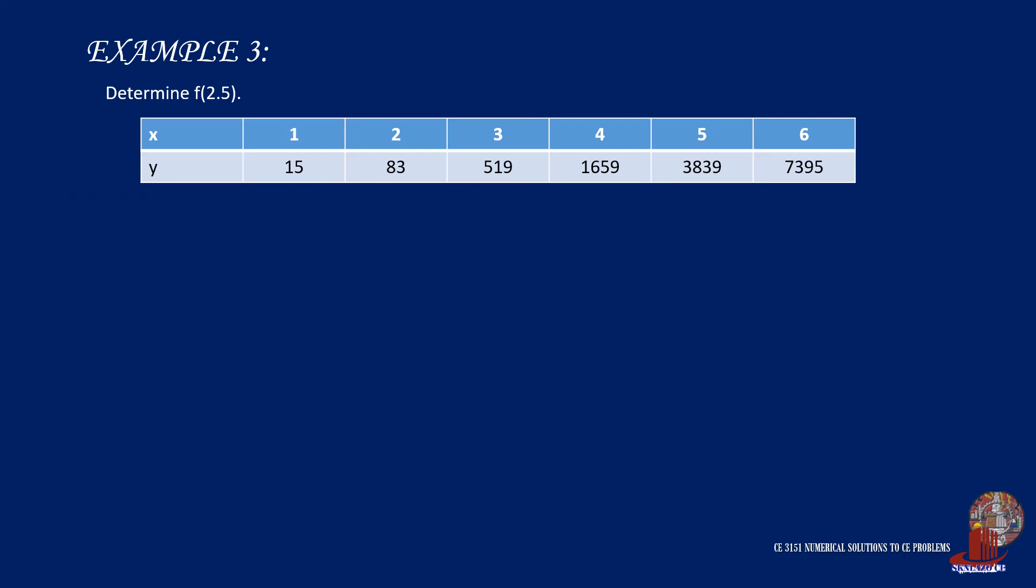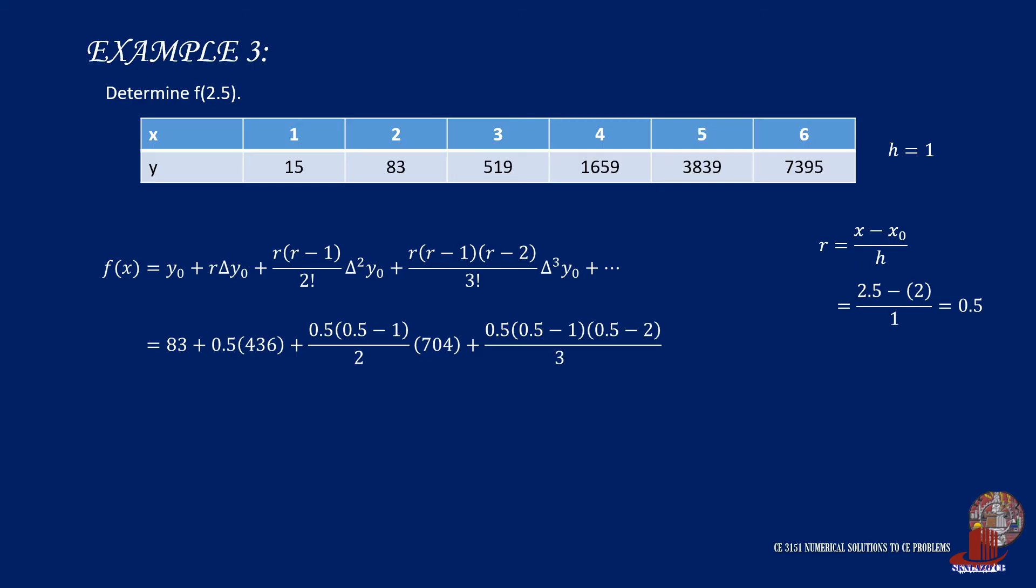By using the second point, although h remains the same, r will be computed as 2.5 less 2, all over h, and now the new value of r is 0.5. Plug the values into Newton's interpolation formula and arrive at 83 plus 218 less 88 plus 21, which gives f(2.5) as 234 just the same.